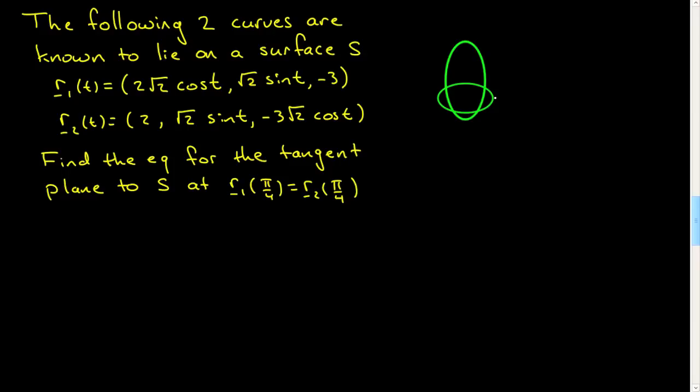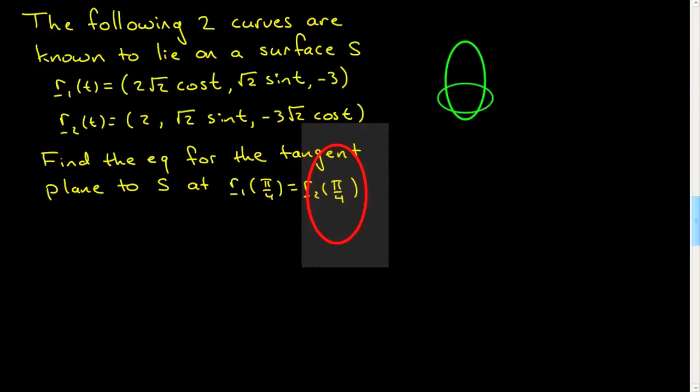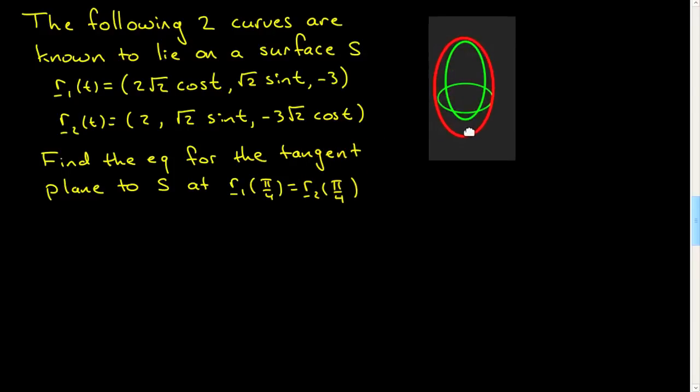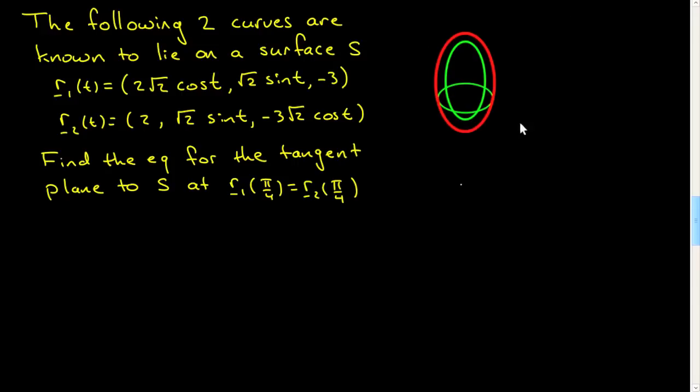It turns out I've chosen these curves based on the previous ellipsoid. These curves happen to lie on the ellipsoid we considered in the previous example, but you're not allowed to use that information. You're just given the curves, and for any surface having these curves on it, you should be able to compute this tangent plane.